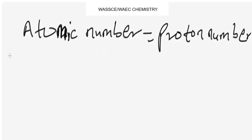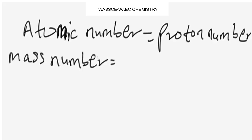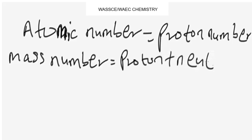The mass number is the total number of protons and neutrons in the nucleus of an atom of an element. So: mass number = protons + neutrons. In an equation, if you are given the mass number and the proton number, all you have to do is subtract the proton number from the mass number to find the number of neutrons.